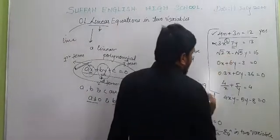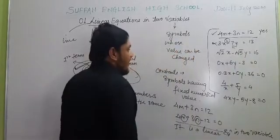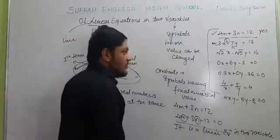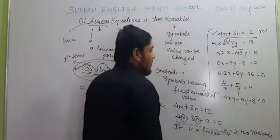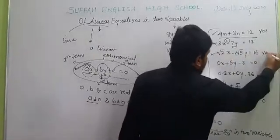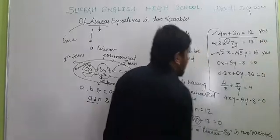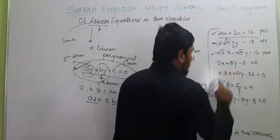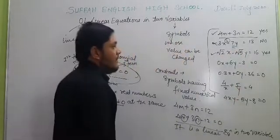For the third equation, X and Y are the variables. The index of X is 1 and the index of Y is also 1, so the degree of each term containing a variable is 1. That is why this equation is a linear equation in two variables.